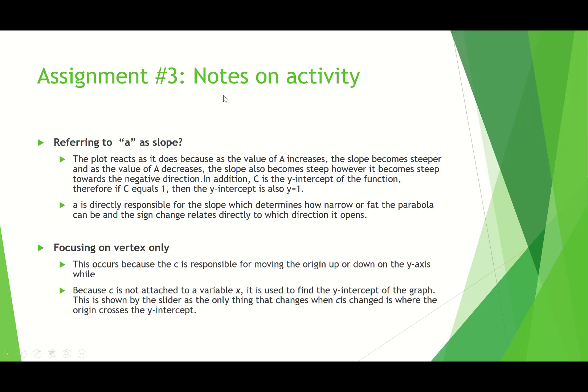And you know, for any point x, sometimes the slope is going to be negative and sometimes the slope is going to be positive. So what I'm doing when I'm asking you to make these exploratory comments and explanations is to practice thinking about the language that you use and the actual way that you phrase things. Here's another one. A is directly responsible for the slope, which determines how narrow or fat the parabola can be. And the sign changes relate directly to which direction it opens. But again, if a is positive, yes, it's concave up. But sometimes the slope is negative and sometimes the slope is positive. So that's why I want you to think a little bit more specifically about what you mean by slope and why the sign changes relate to the direction.